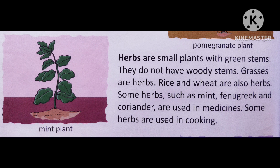Some herbs like coriander leaves — your mother might be using at home for making chutney. That coriander, or dhania, is also a herb. Some medicinal plants like mint and fenugreek are all herbs and are also used for cooking. Spinach, or palak, which your mother might use in the kitchen for making palak paneer — that is also a herb.